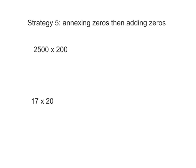Hello, grade fives. This is what we're going to do today. We're going to look at the next strategy we have for multiplying, and this is a really important one. We will do this a lot in the next little while, and it's called annexing zeros and then adding zeros.